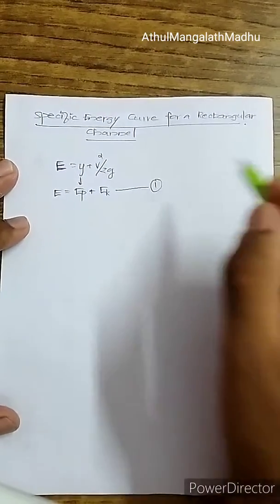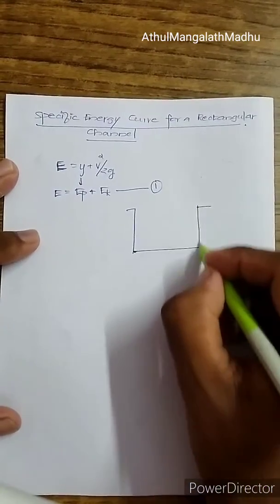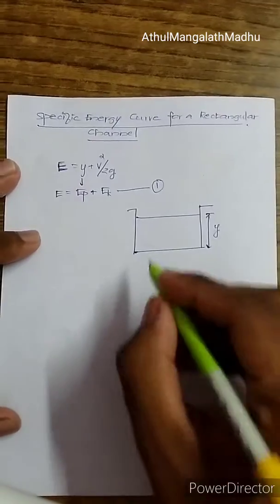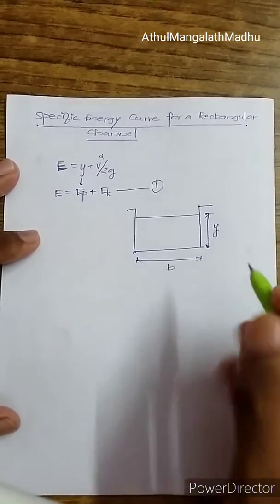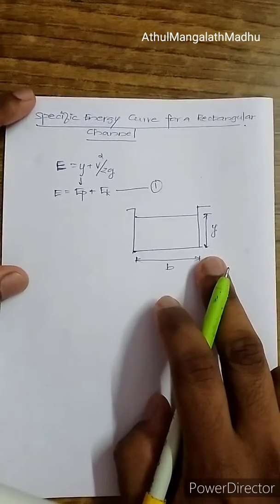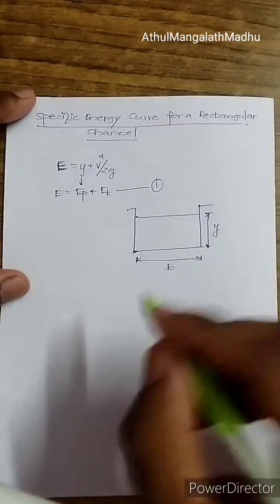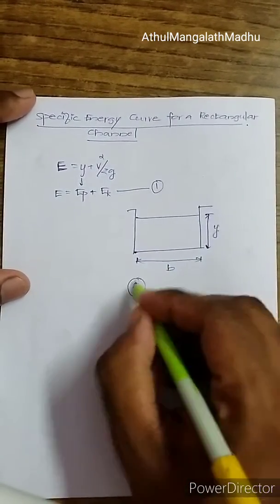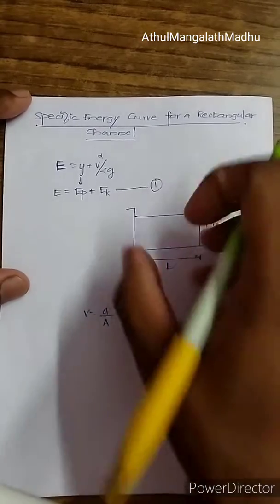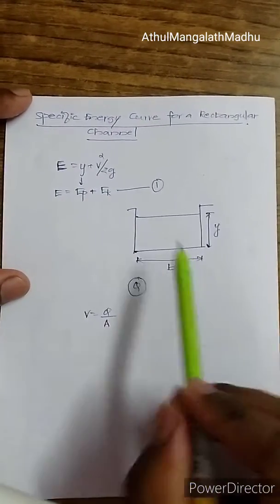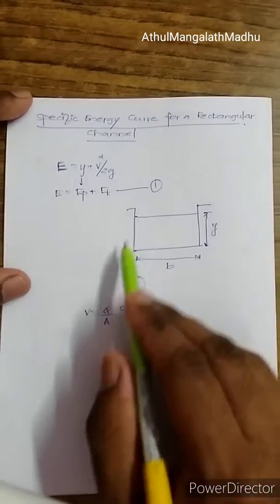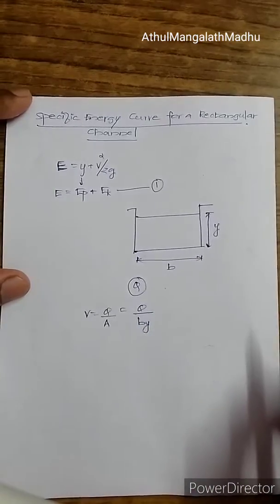I am assuming a rectangular channel with a depth of y and a bottom width of b. The discharge to this channel is Q, and by the continuity equation, the velocity v = Q/A. The area of this rectangular channel is b times y, so v = Q/(b·y).